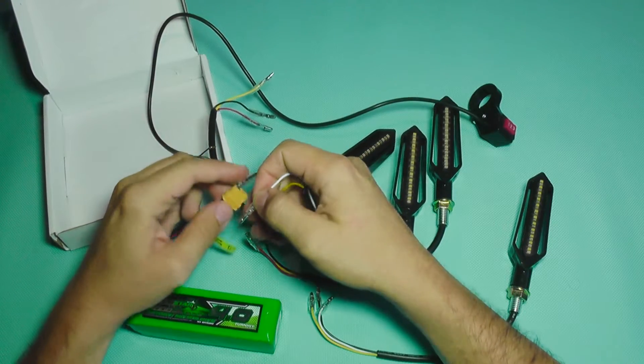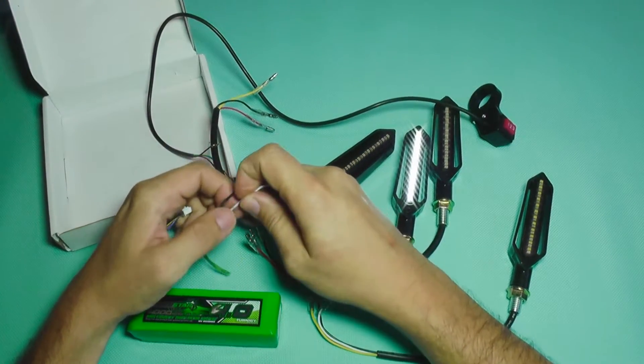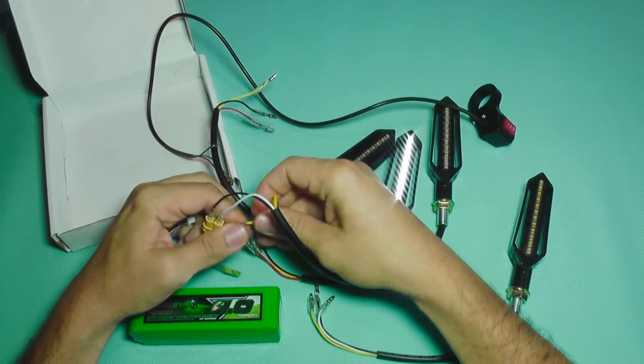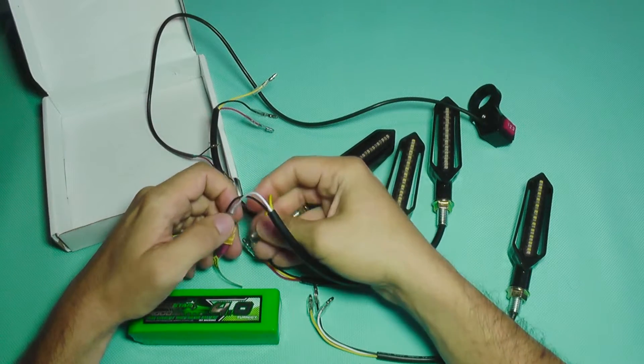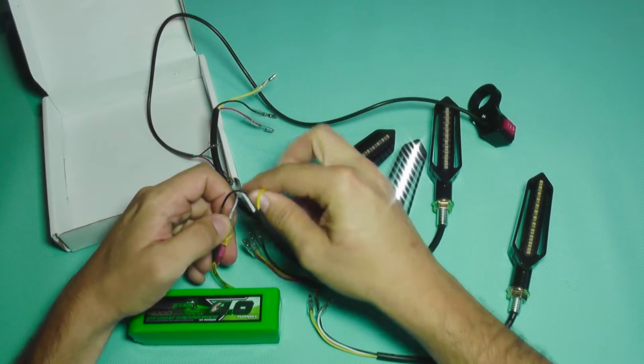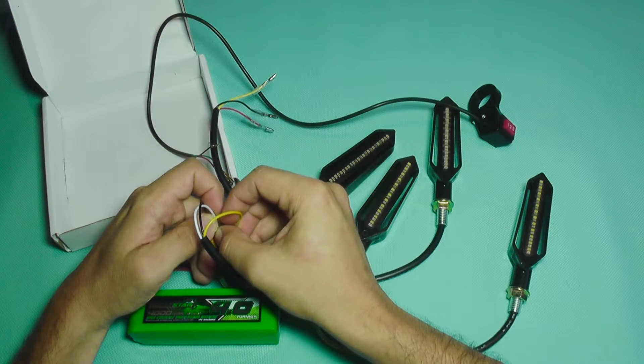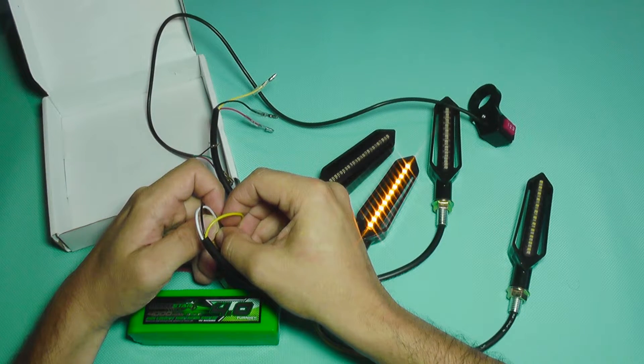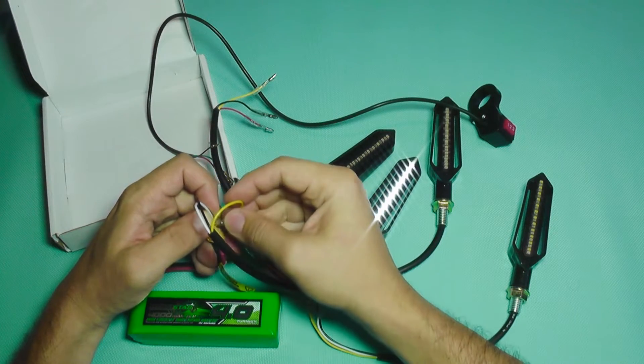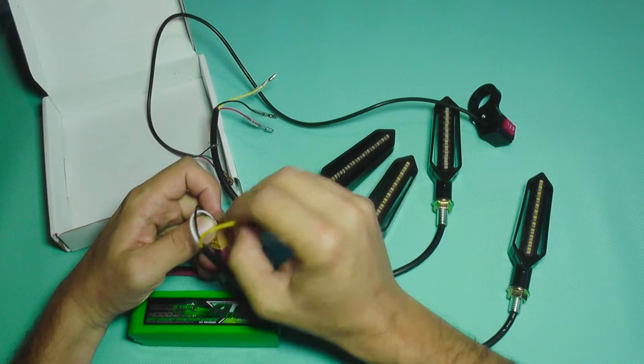Of course, it uses the same logic. So if this is working and I want to take a turn with the scooter, I will connect the other wire. As soon as I connect the yellow wire, it will start blinking, and when I remove it, it will return to the white state.